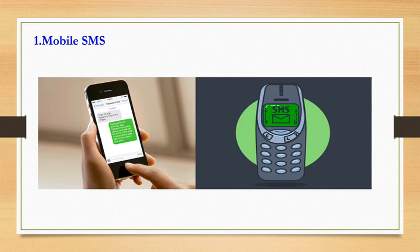If the recipient's phone is not switched on or is out of the coverage area, the SMS message will be stored in the SMS center and sent to the recipient as soon as the phone is switched on. SMS is similar to WhatsApp, but in WhatsApp we can send the same message to many people and can send media like video and audio as well. SMS had some limitations but at that time it was very popular.